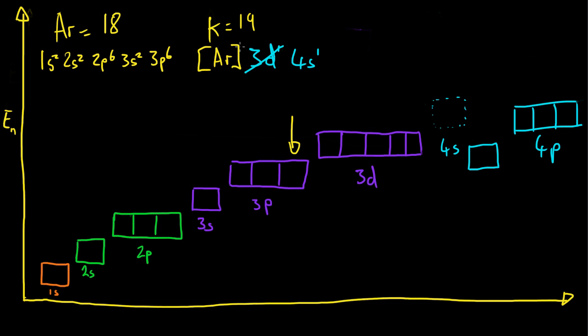So now that we know this, we can write the electronic configurations of elements 19 and 20, potassium and calcium. So let's write those down here. So we have potassium, and that is going to be argon 4s1, and calcium, which is argon 4s2.